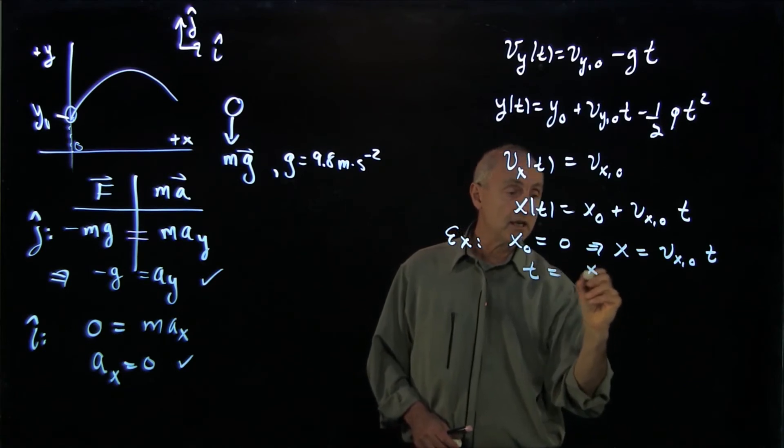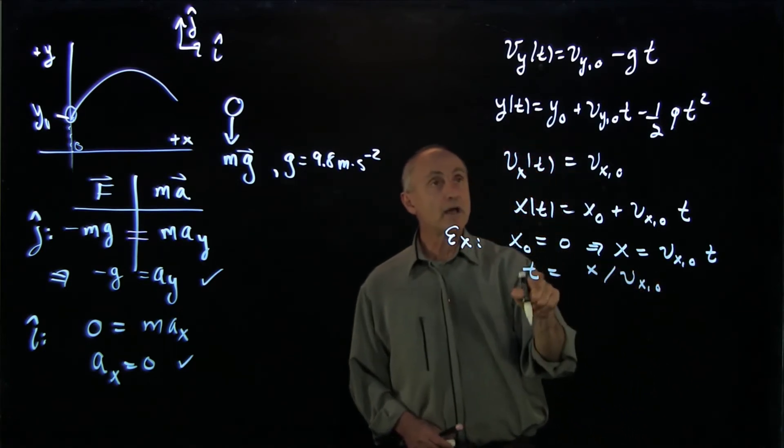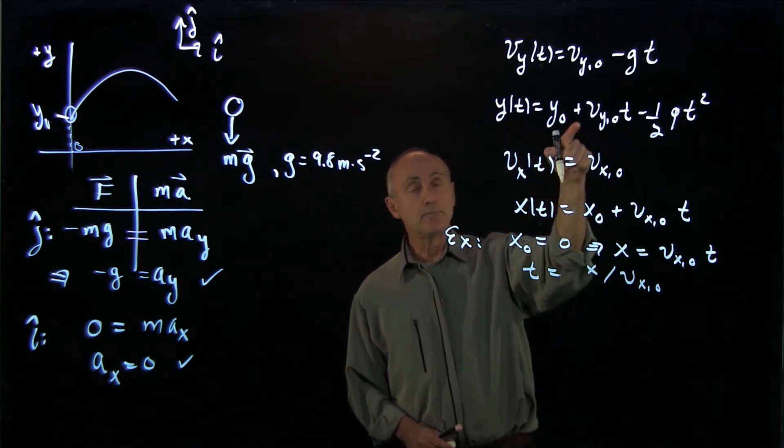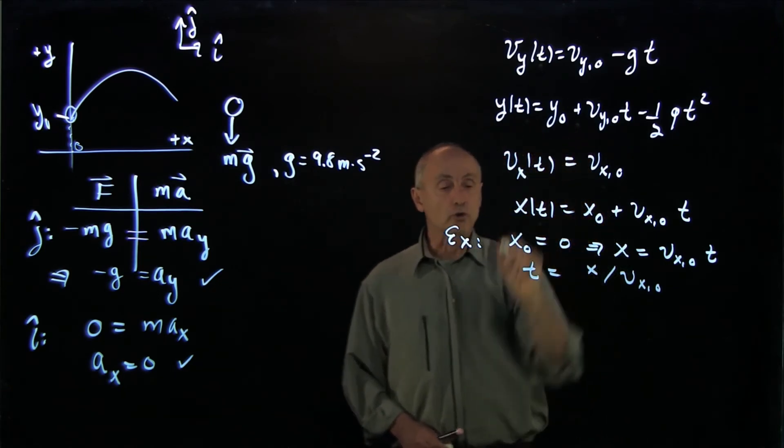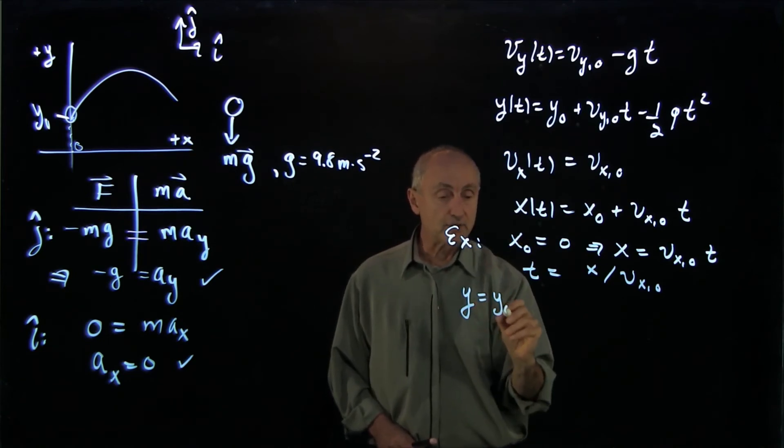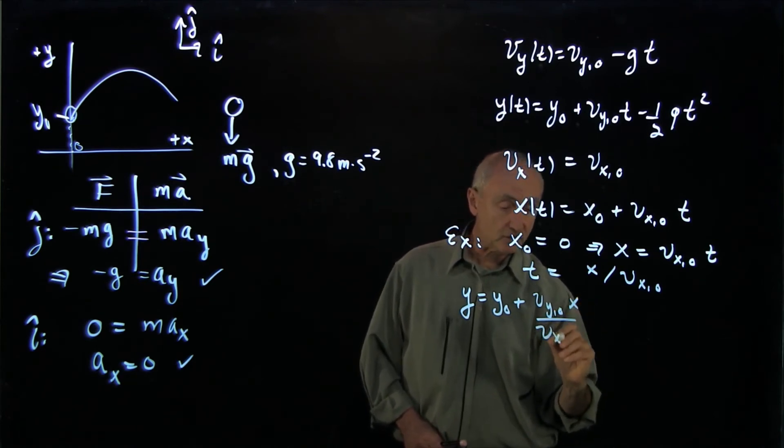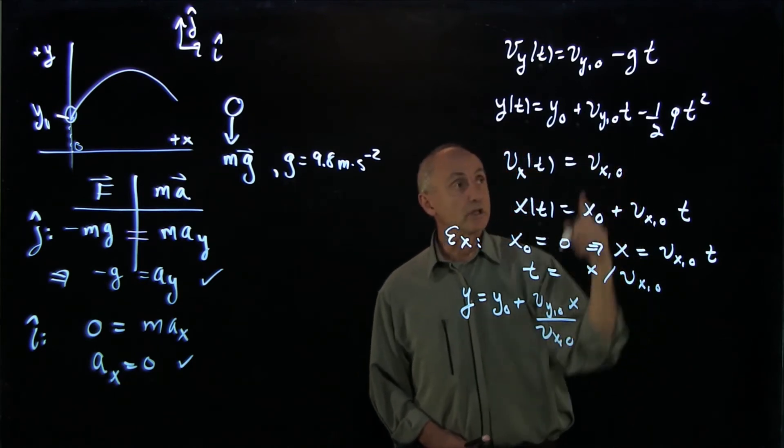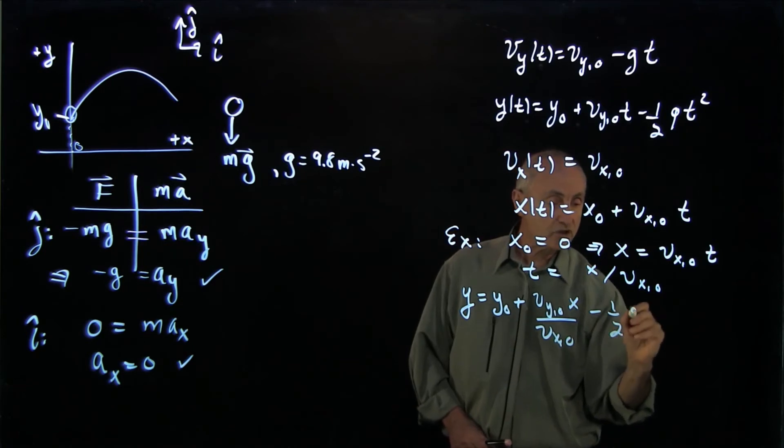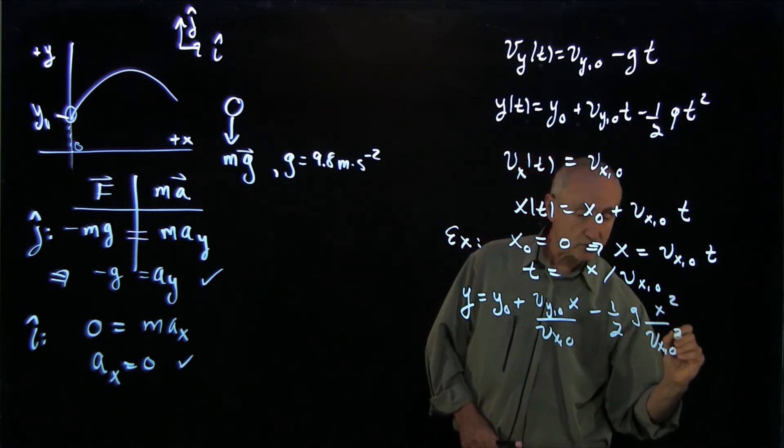That tells us that t is x divided by vx0. And now I can take this value of t and put it into our vertical equation. And I get y is some initial value y0 plus vy0 x over vx0, substituting for t, minus one-half g x squared over vx0 squared.